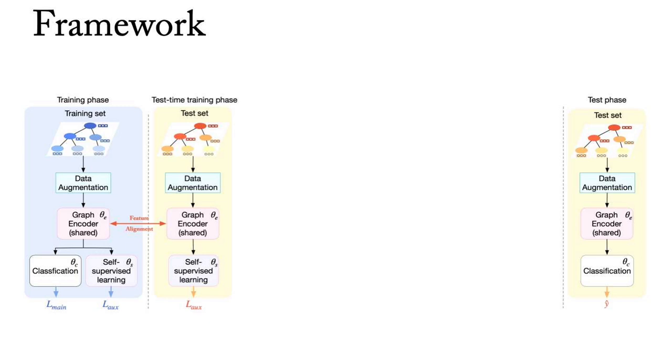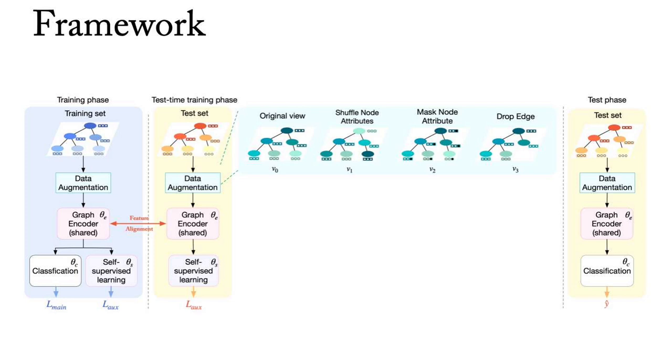For data augmentation, we apply strategies like shuffling node features, masking node features, and dropping edges, resulting in four views for self-supervised learning.